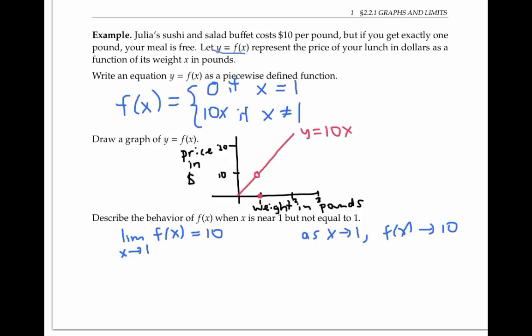Notice that the value of f at one is actually equal to zero, not 10. And so the limit of f of x as x goes to one, and the value of f at one, are not equal. This illustrates the important fact that the limit as x goes to one doesn't care about the value of f at one — it only cares about the value of f when x is near one.